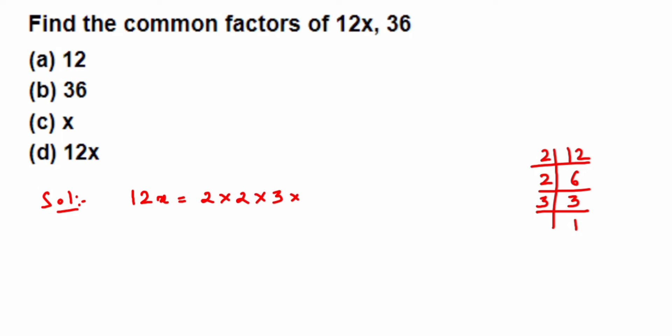Now similarly for 36. I'm going to do a prime factorization of 36. Again going to start with 2. 2 eighteens are 36, then 2 nines are 18. Now 9 goes in 3, so 3 threes are 9, and again 3 ones are 3. Make sure that we get only prime numbers. So 36 is equal to 2 × 2 × 3 × 3.